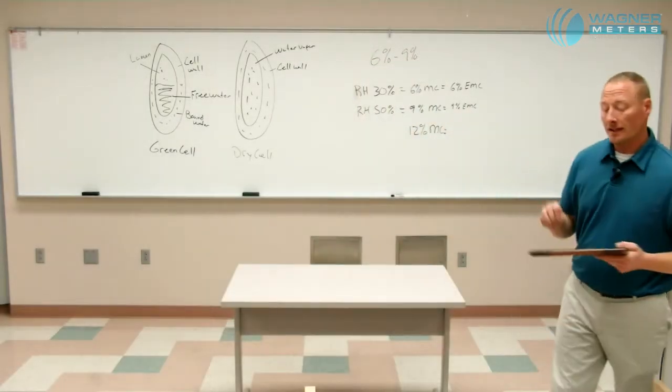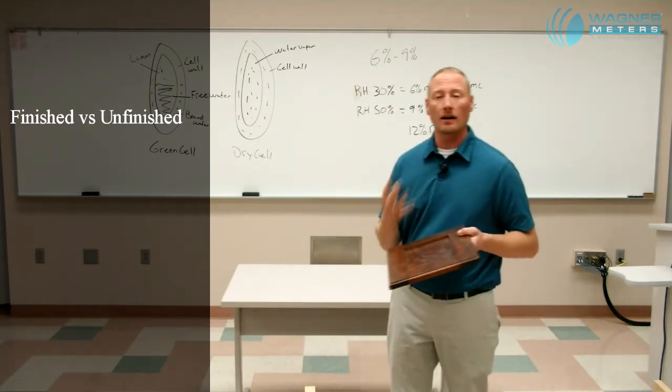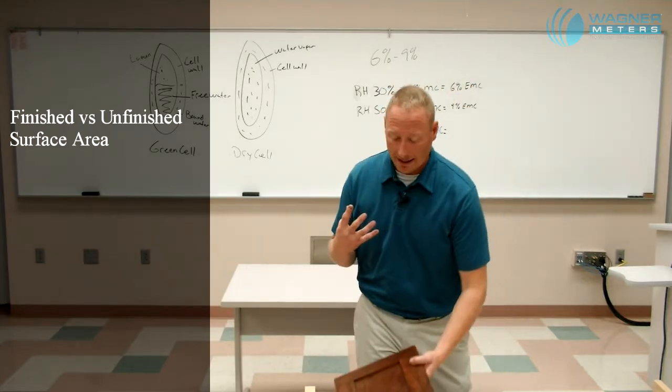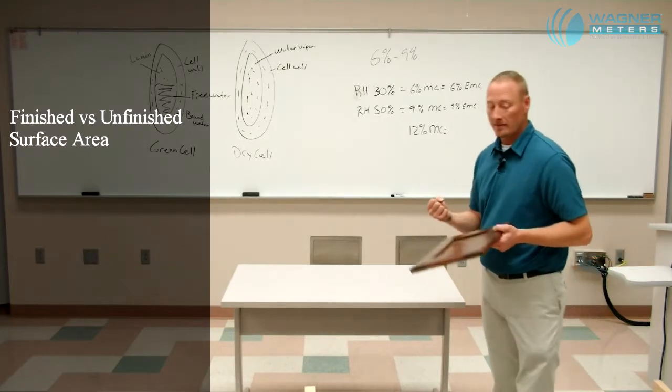A finished product is going to move at a much slower rate or change moisture content much slower than an unfinished product. The amount of surface area of that finished product also has a lot to do with the actual changing of that moisture content of that EMC.